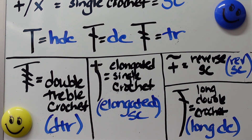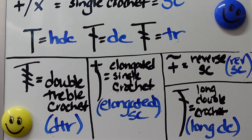Next we have the elongated single crochet. It uses the plus symbol — which we learned earlier is one of the symbols for single crochet — and then a long curved line, showing you that it's elongated. Its abbreviation is the word 'elongated' and then sc for single crochet.